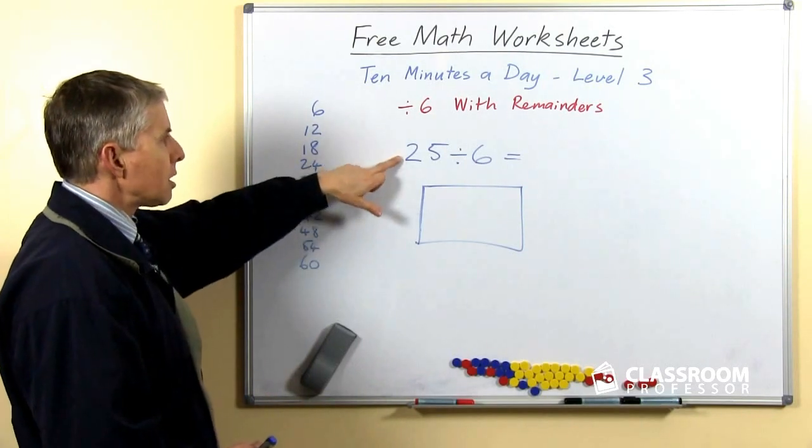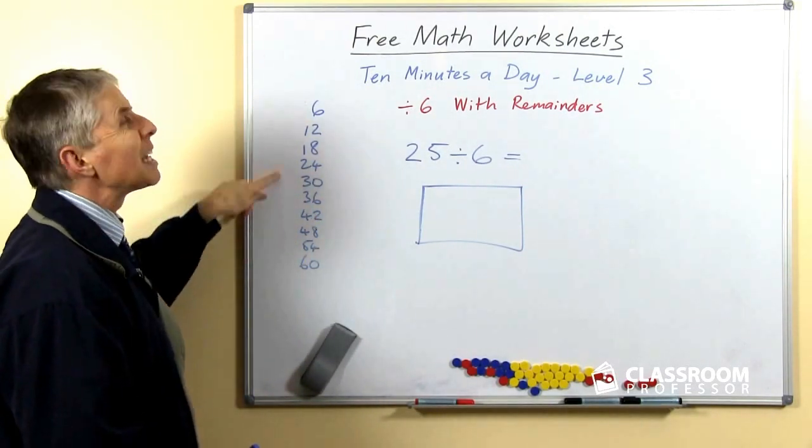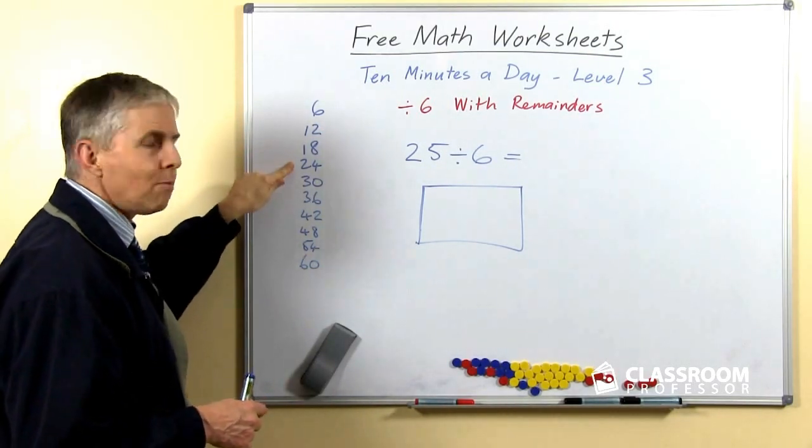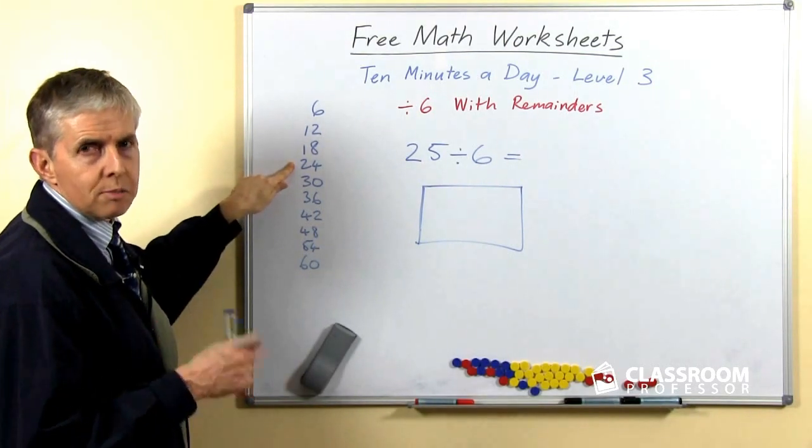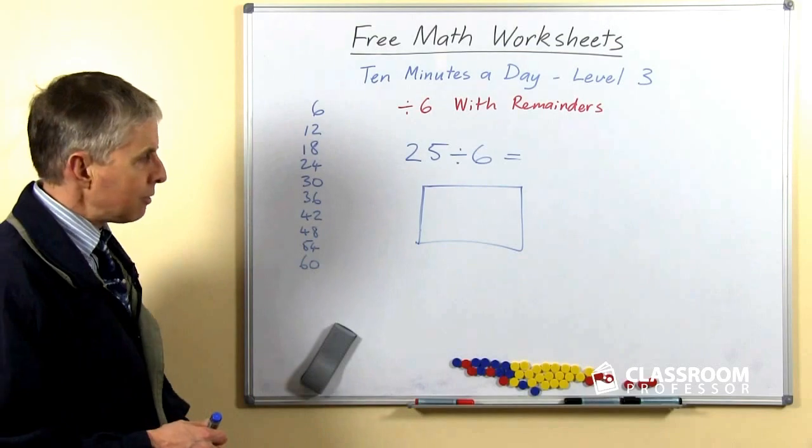So looking at a question like this, we want the students to be able to think to themselves: what is the biggest number in this list that's less than 25? Of course it's 24. Then remember that that is 4 times 6, then subtract that from 25 and there's 1 left.